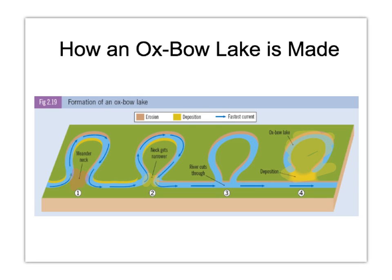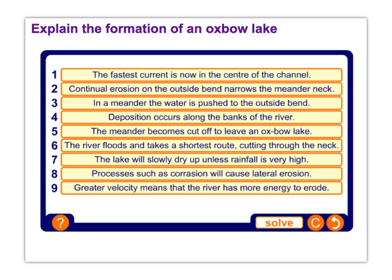When the river cuts across its cutoff point it has very little energy, so it deposits all its load. This deposition eventually seals off both ends of the meander, leaving the oxbow lake. An example of an oxbow lake in Ireland is the old stage of the River Moy in County Mayo.